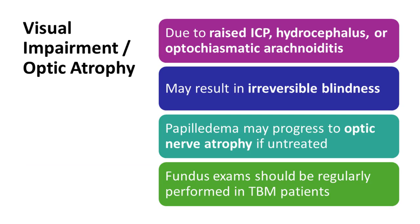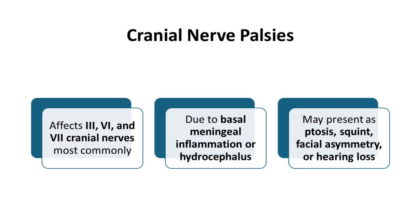Optic neuritis and optic atrophy are important complications — from papilledema or TB vasculitis — and can lead to irreversible blindness. Be careful with ethambutol and linezolid, both of which have ophthalmic side effects. Fundus examination should be done regularly, at least monthly, in TBM patients. Cranial nerve palsies commonly seen include sixth nerve palsy causing lateral rectus palsy, upper motor neuron facial nerve palsy especially with internal capsule involvement, and third nerve palsy causing ptosis due to inflammation or hydrocephalus.